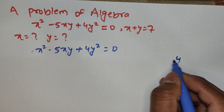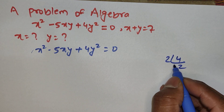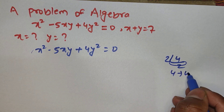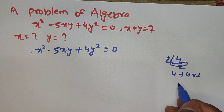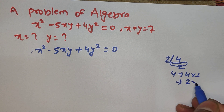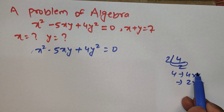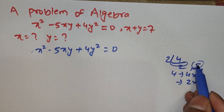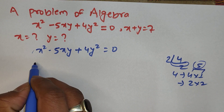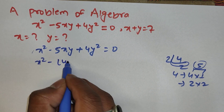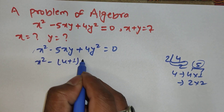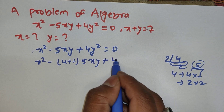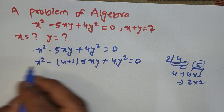The factors of 4 are 4 times 1 and 2 times 2. If we add the factors 4 and 1, we get 5, so this is our case. So we rewrite as x² minus (4 plus 1) times xy plus 4y² equals 0, splitting the middle term.